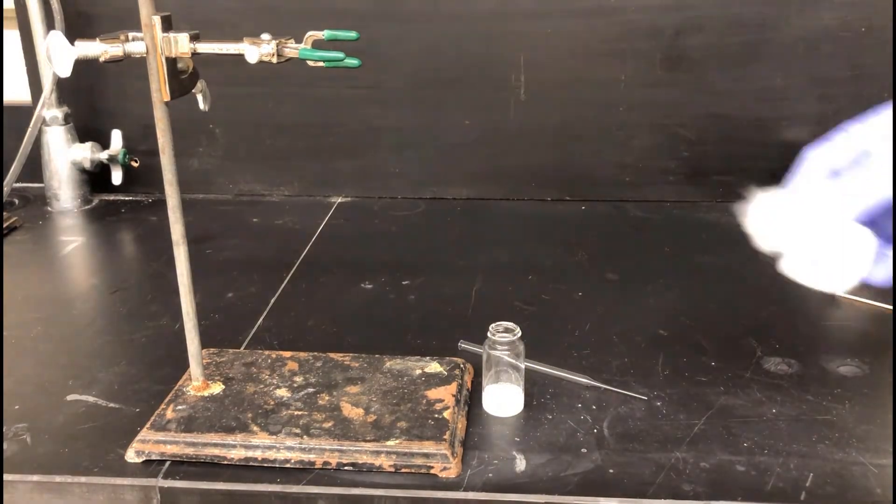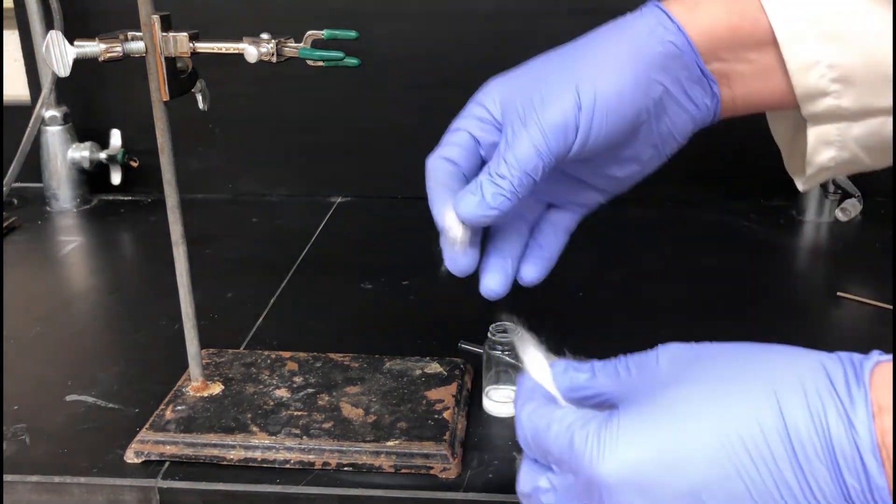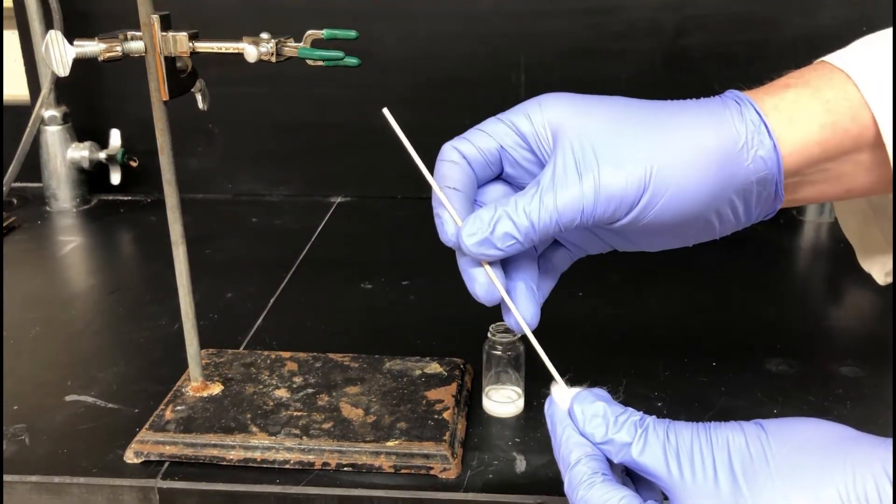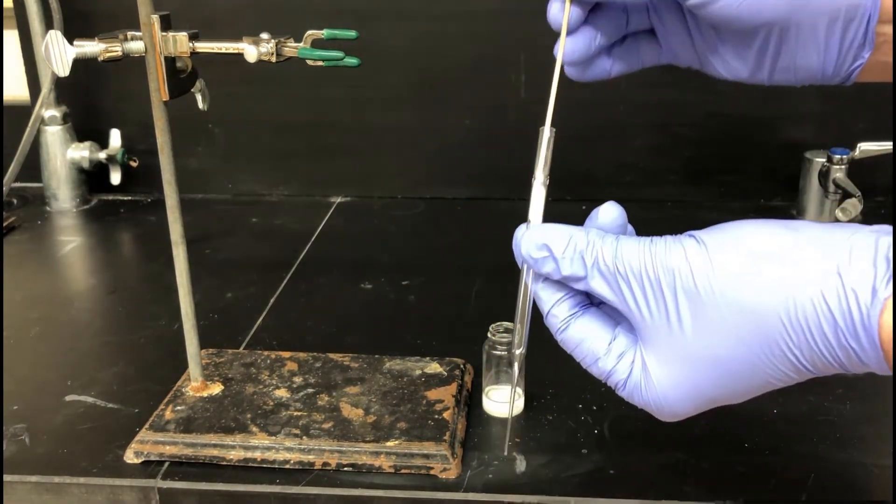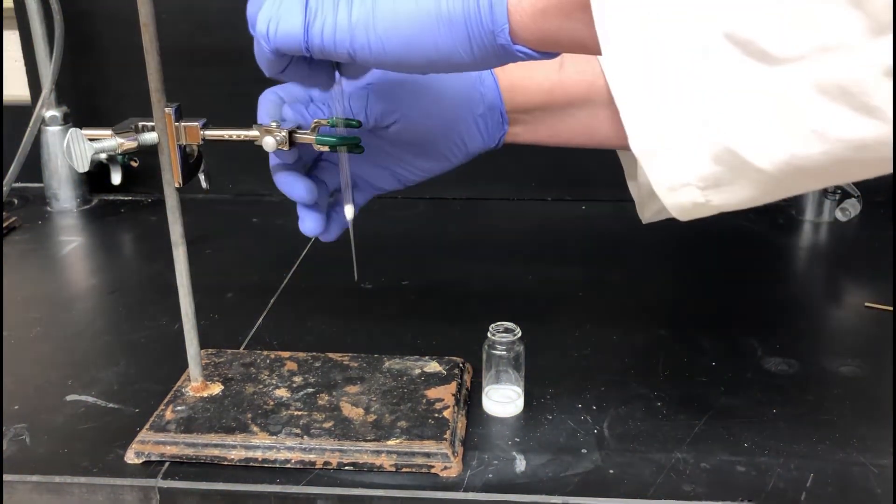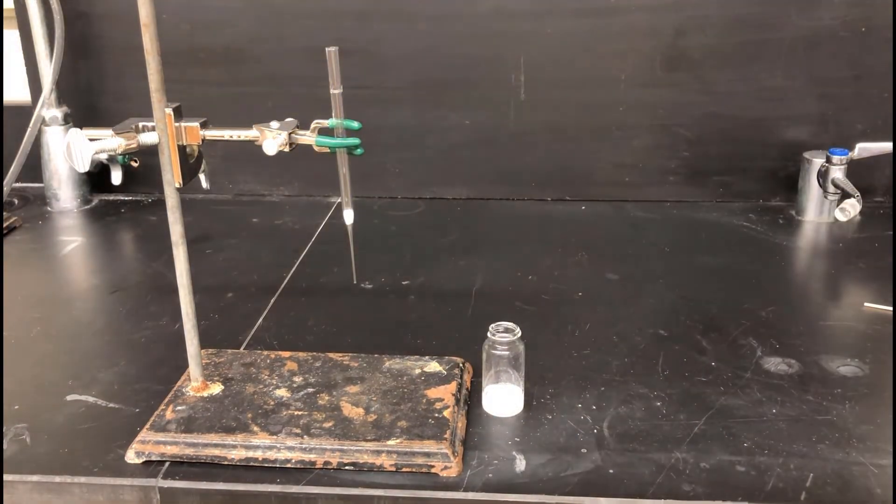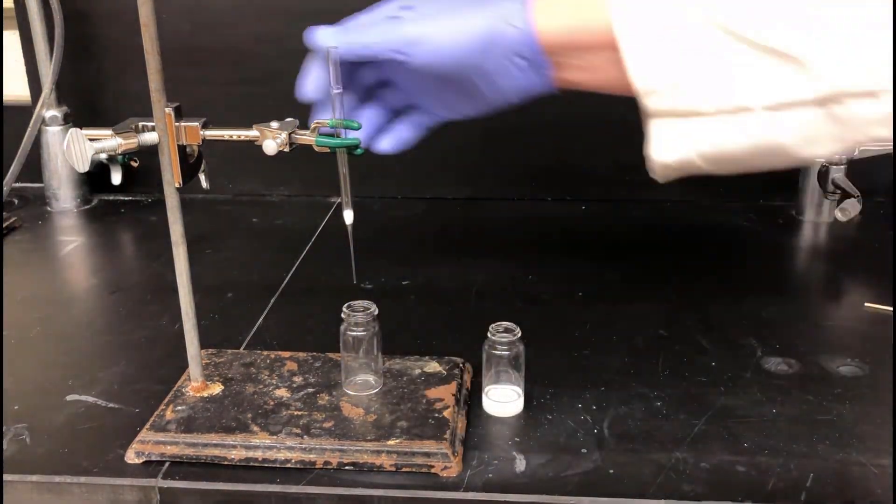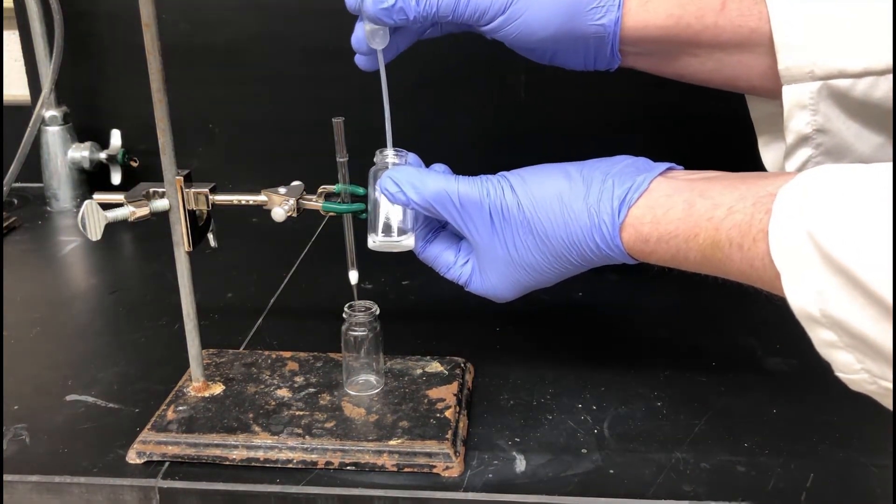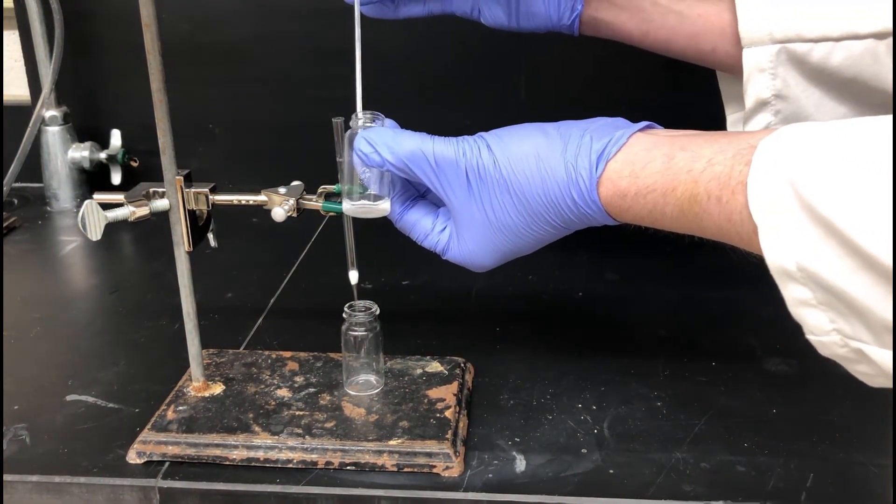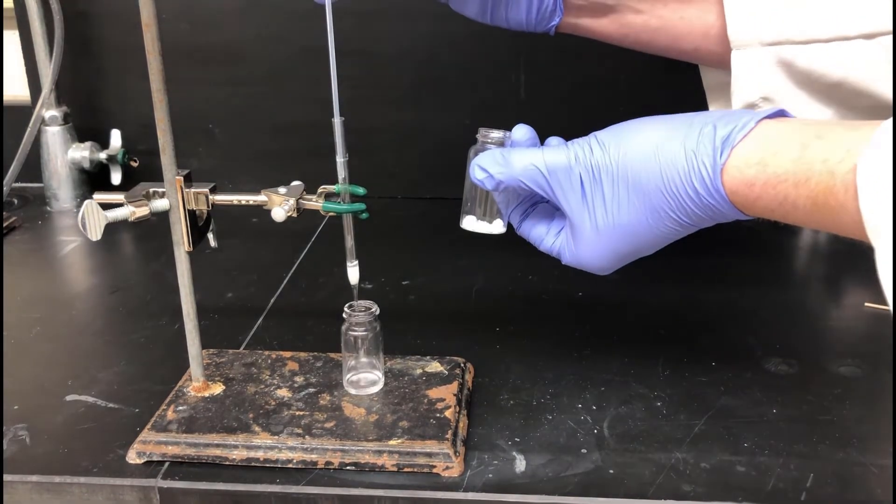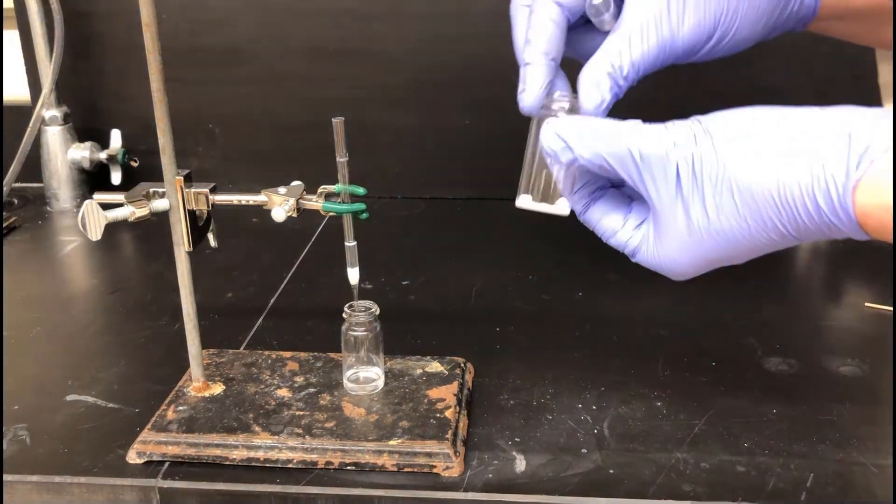After the mixture has sat for a while, we'll filter off the magnesium sulfate using a microfiltration apparatus. This consists of a small pipette with a little bit of cotton jammed into the tip. Push the cotton down into the tip of the pipette. Clamp it to a ring stand. And then pipet the mixture through into a clean, dry, pre-weighed vial. The cotton will filter out any magnesium sulfate that gets into the pipette. This reaction mixture contains the alkene products of interest but could also contain some unreacted alcohol starting materials. We'll need to do GC analysis to tell for sure what's in there.